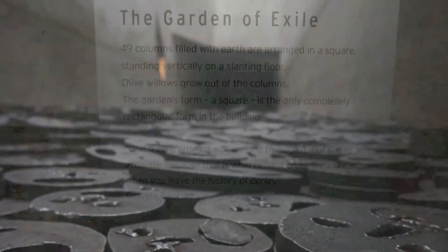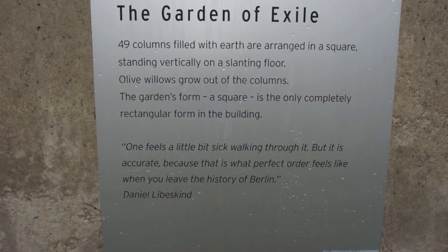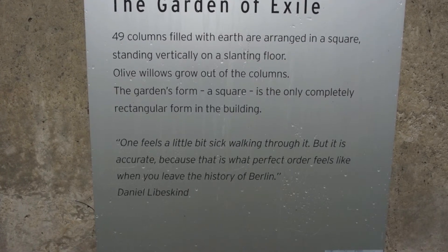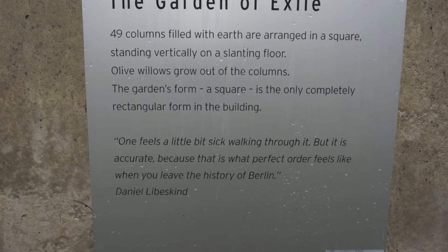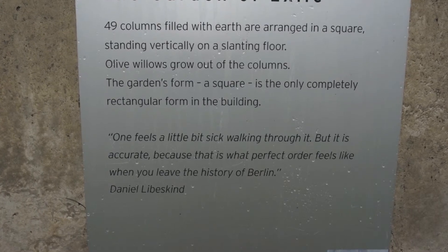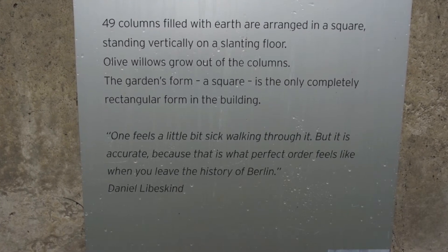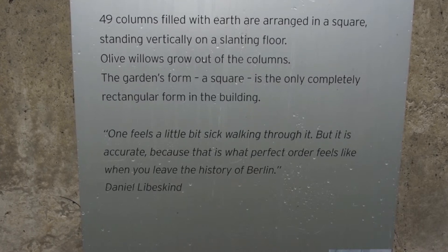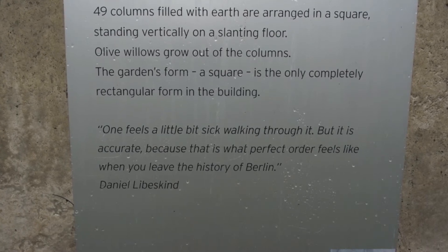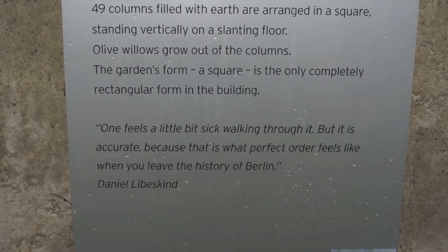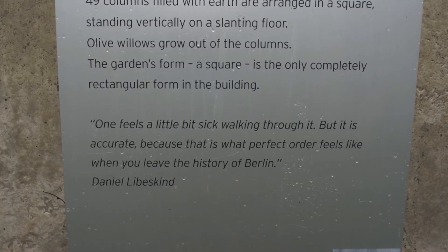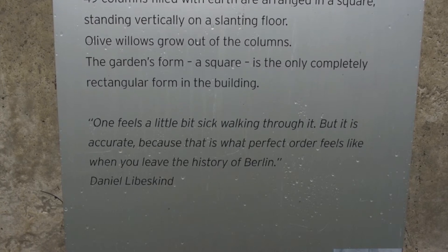I want to focus on one final space as we consider this museum in Berlin, and specifically it's Libeskind's Garden of Exile. As you can see from the plaque that greets the visitor as you enter the space, there's a significance to the number of columns and their arrangement, and also very significantly to geometric form. The garden's form — the square — is the only completely rectangular form in the building. So this abruptness, this contrast with the angularity, the juxtapositions, and the movement that you feel as you walk through the rest of the new museum, is quite startling.